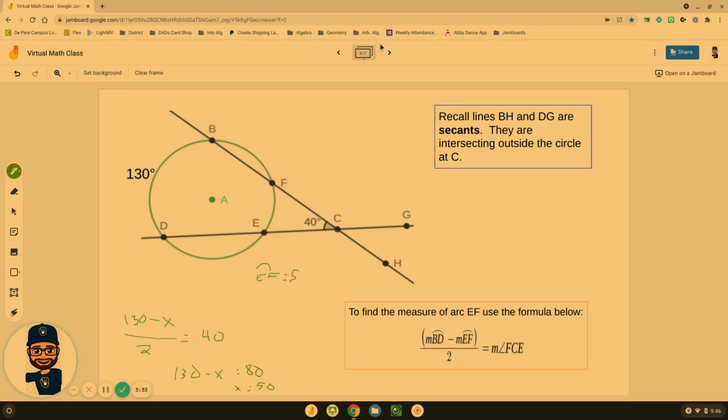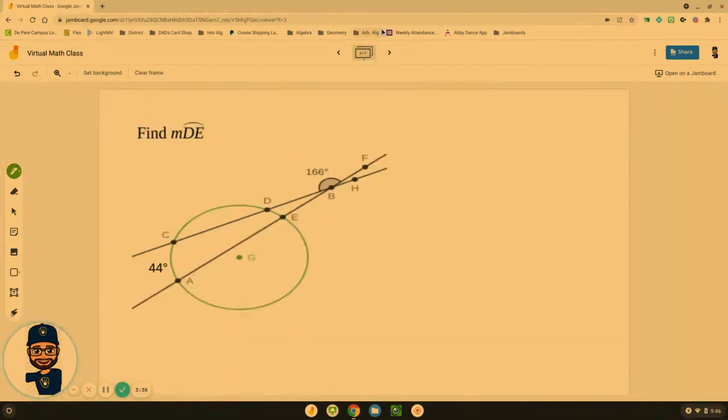But it's the arc minus the arc divided by two gives us the angle measure. Let's see if you can put that to practice on this example. They give us the larger arc again, we don't have this small arc and now I don't even have the angle measure in here.